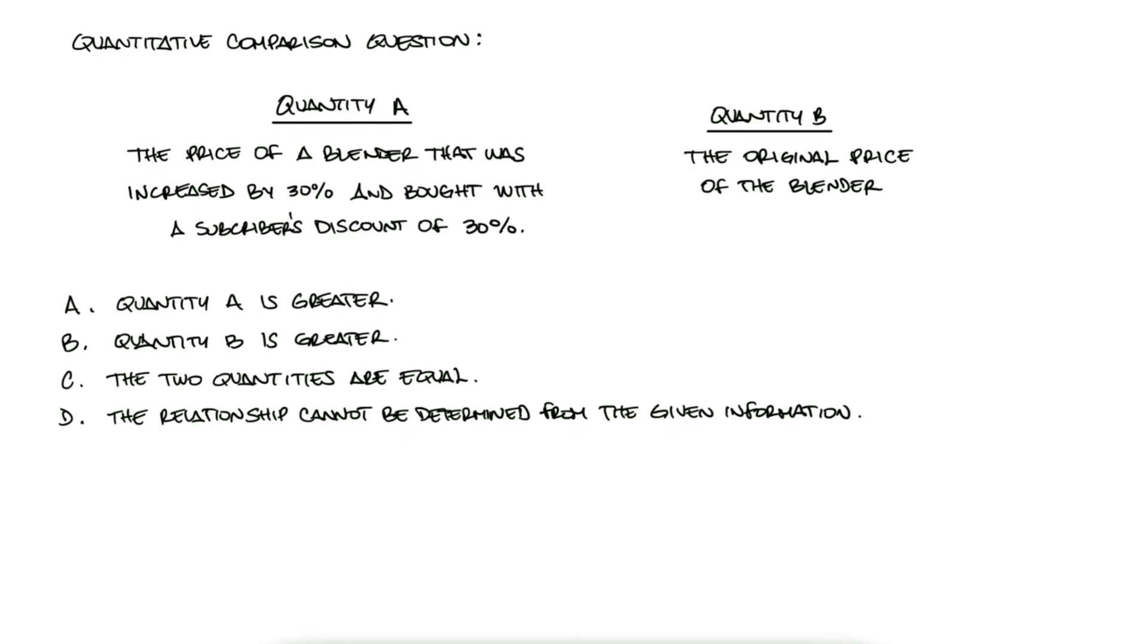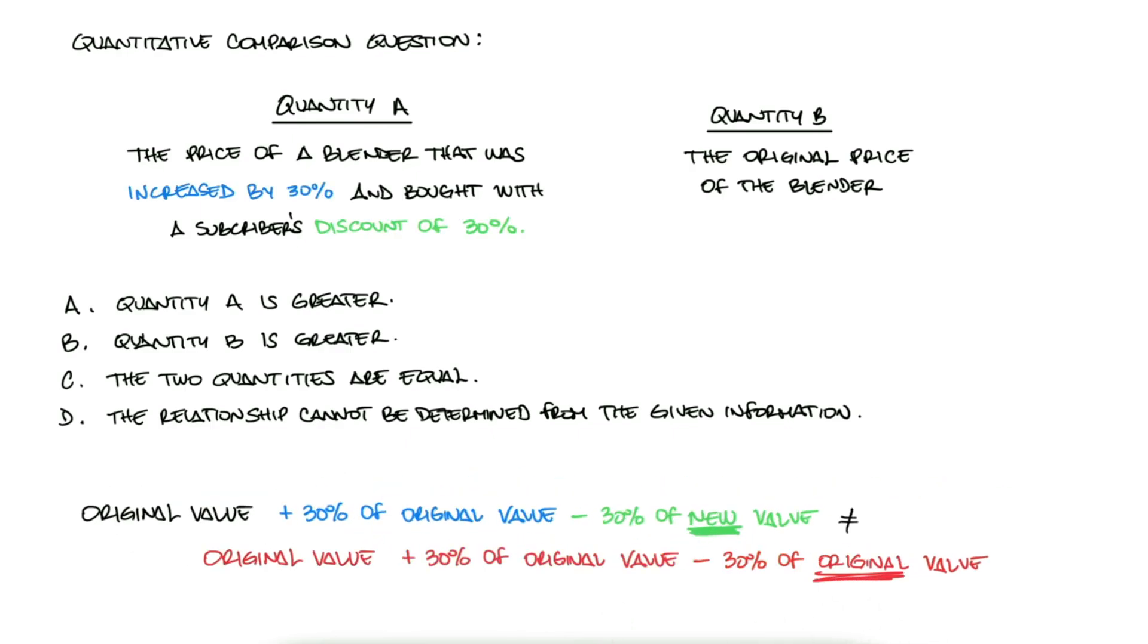The first lesson is that you might think you need an actual number price either at the end or at the beginning to compare them. You might be inclined to choose D, that there is missing information, but that's not the case. You can always compare values in terms of an unknown variable. The second more important lesson is that successive percentage changes do not yield the same value change as the addition or subtraction of percentages.